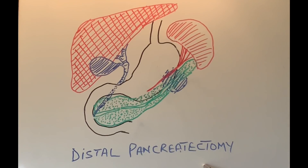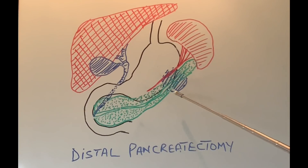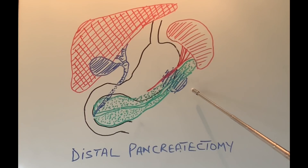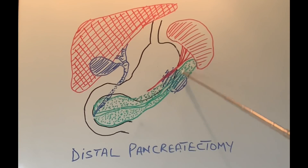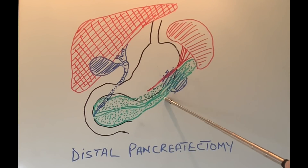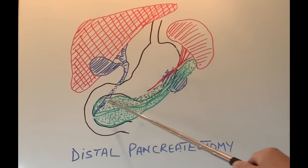When is distal pancreatectomy performed? It is performed when there is a lump in the body or tail of the pancreas — at the junction of the body and tail. This lump can be a large cyst, a suspected cancer, an actual cancer, or a benign tumor causing trouble to the patient. To remove this, the surgeon cuts across this part of the pancreas, usually stapling it. The body and part or all of the tail are removed, leaving the patient with only the head and neck portion of the pancreas.